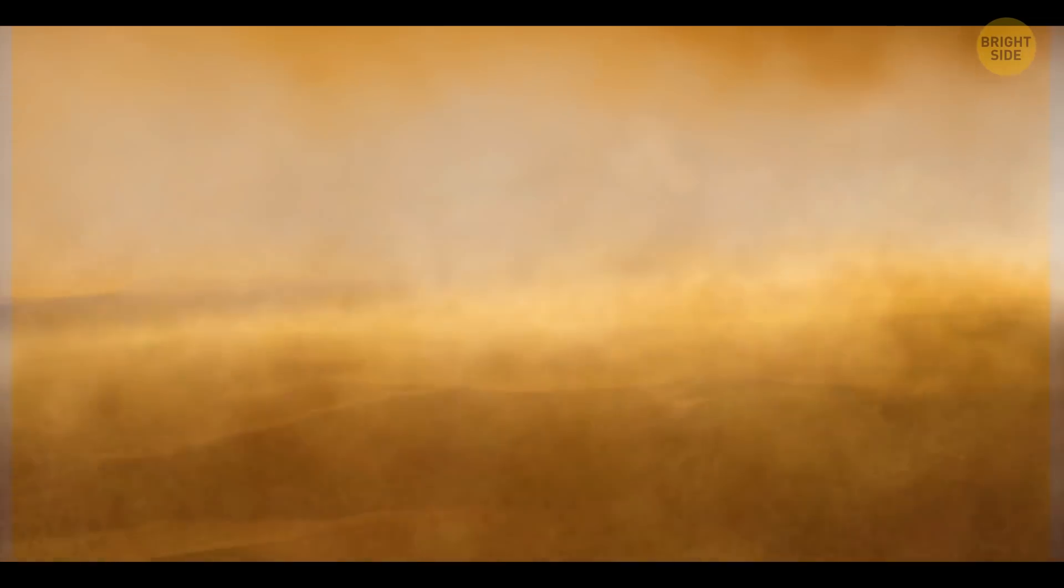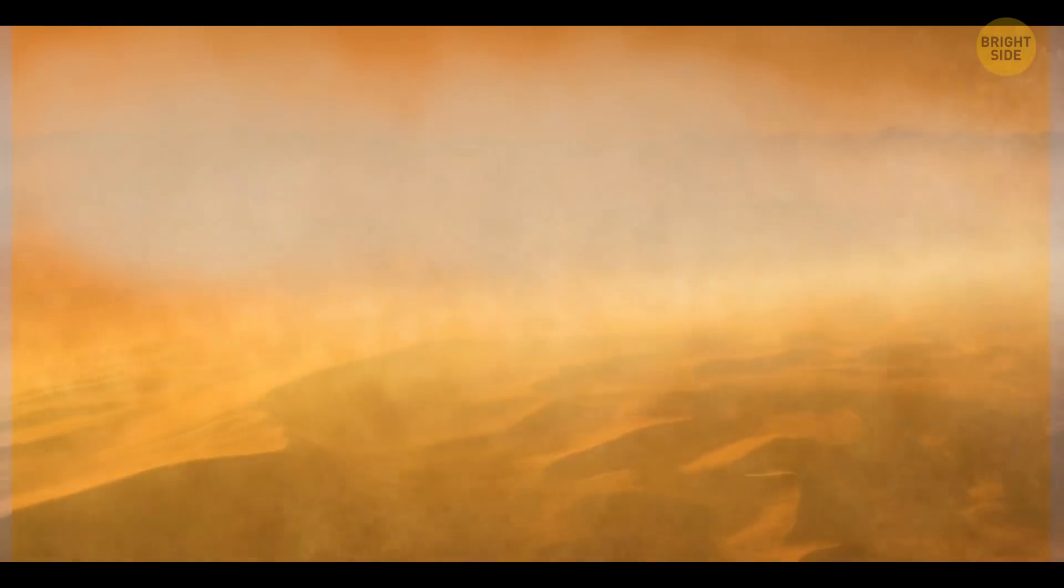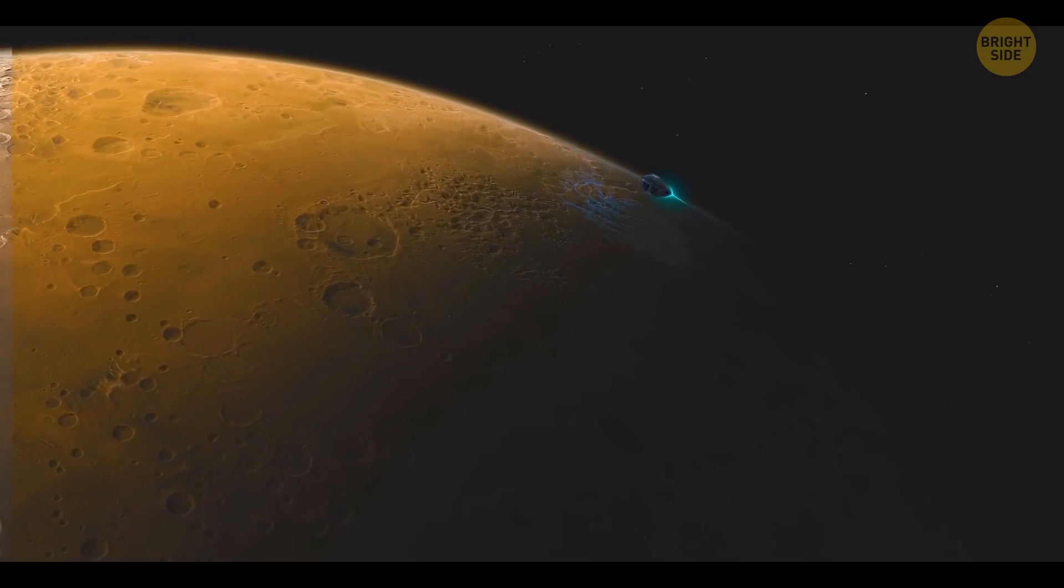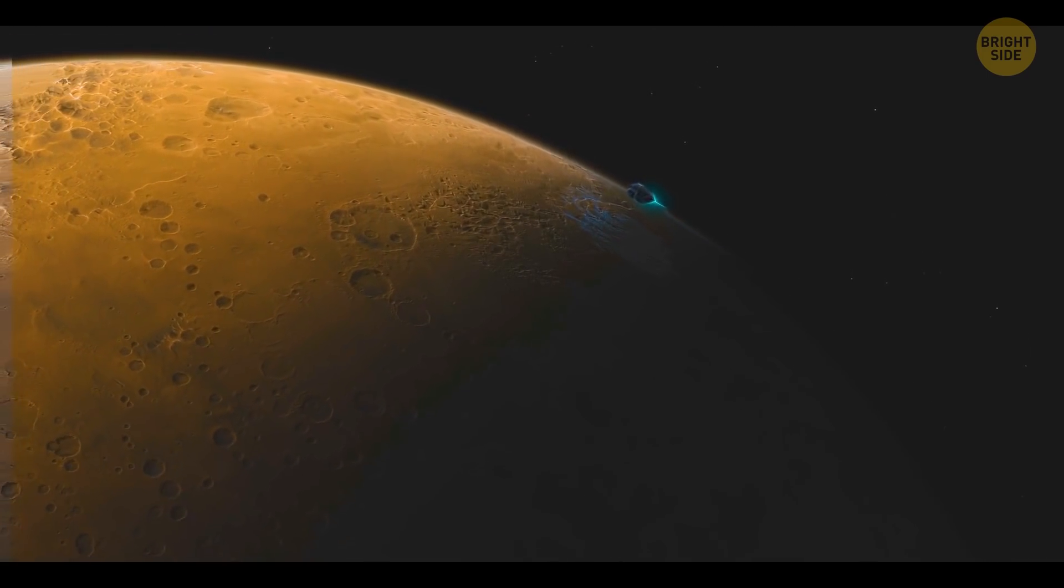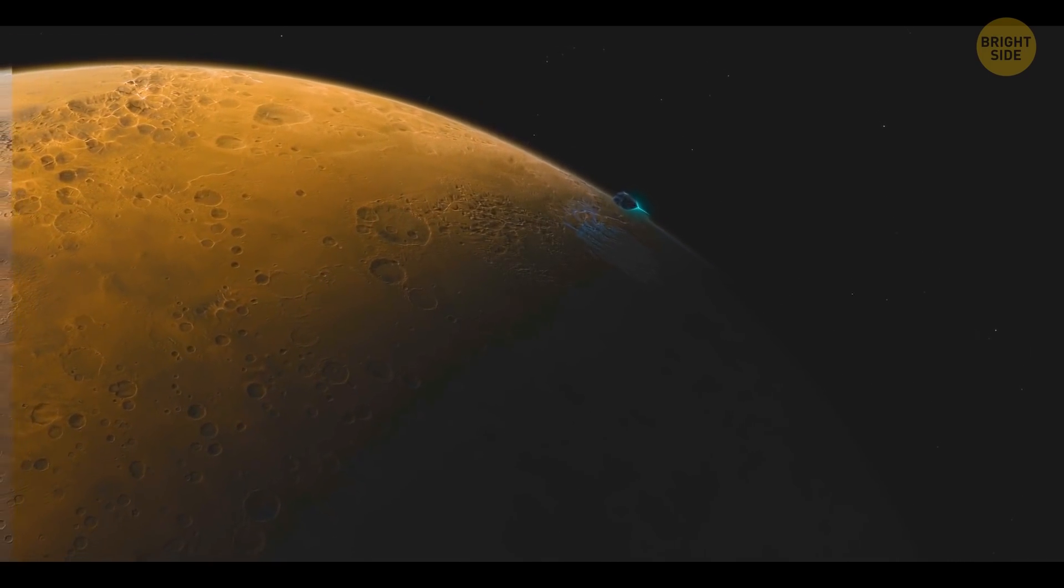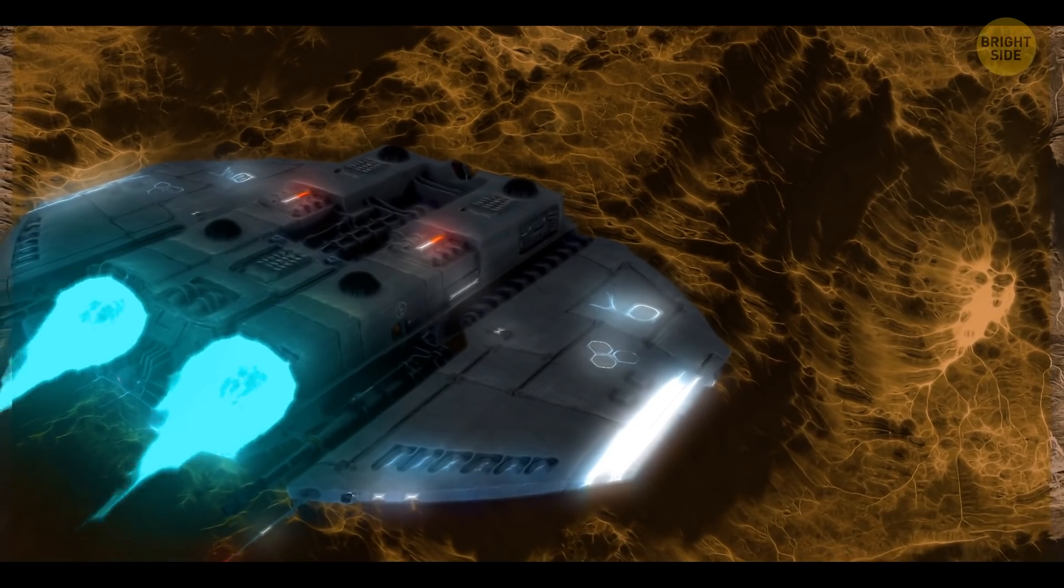Different gases fill the atmosphere there. Star rays pass through them to the planet's surface, reflect off it, and rise upward. But the dense gases don't let them leave the atmosphere, so the planet gets hotter and hotter.